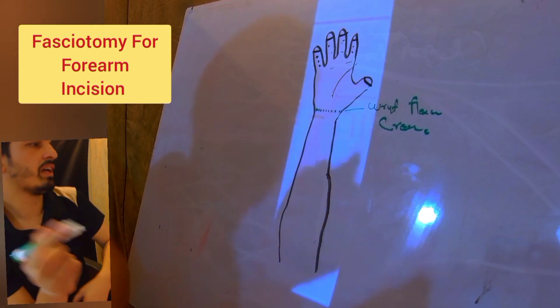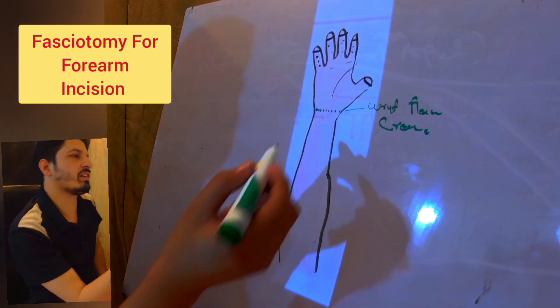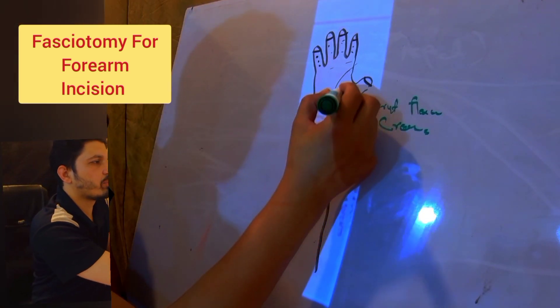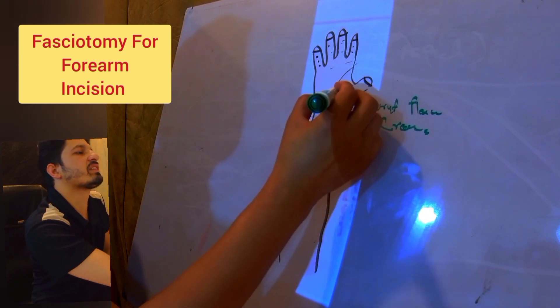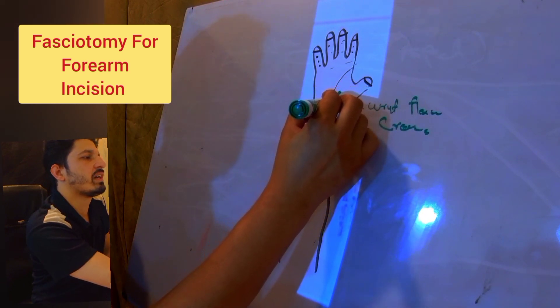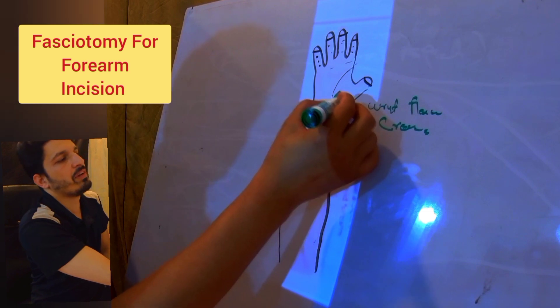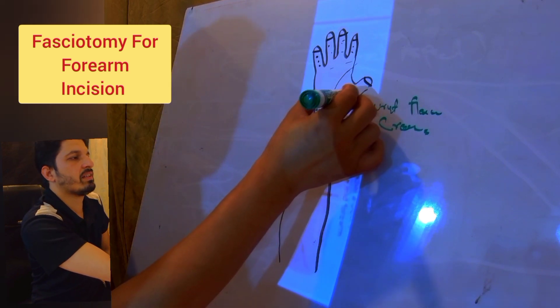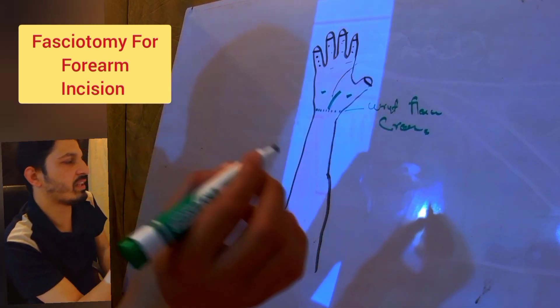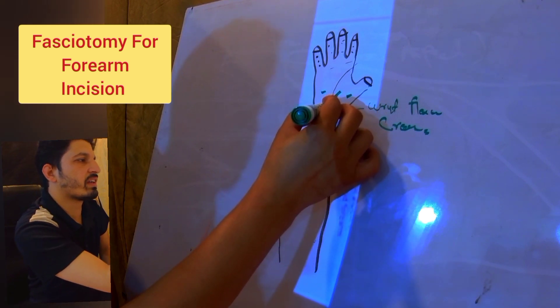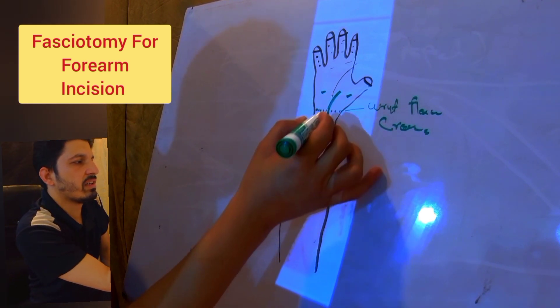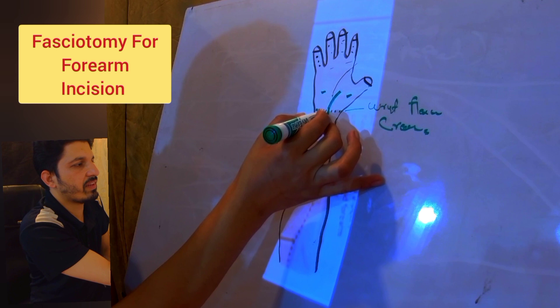A straight incision midway between the thenar eminence and the hypothenar eminence over the wrist flexion crease, then across the wrist flexion crease. It is angled obliquely towards the ulnar aspect of the distal forearm.